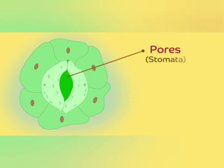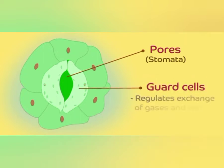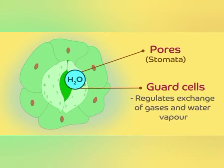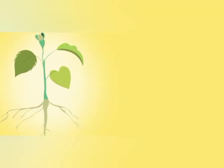Stomata are controlled by two kidney-shaped or bean-shaped cells called guard cells. These guard cells control the opening and closing of stomata and in turn control the gaseous exchange and the exchange of water vapor. Only young stems have epidermis.